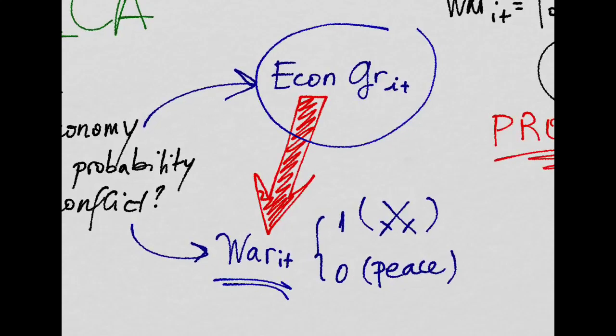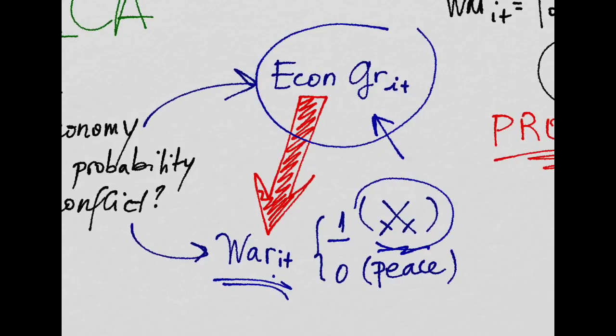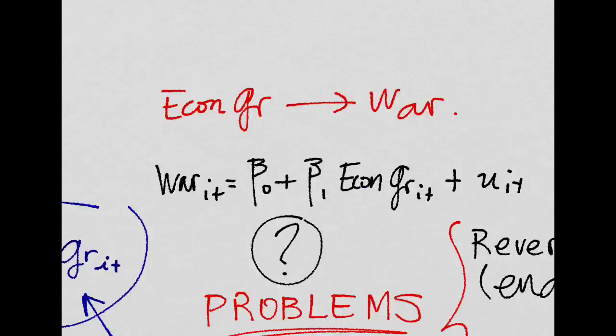For that, we use simple economic growth and a dummy variable, an indicator that is one for a country when that country has a war or conflict during that year, or zero if there is peace.